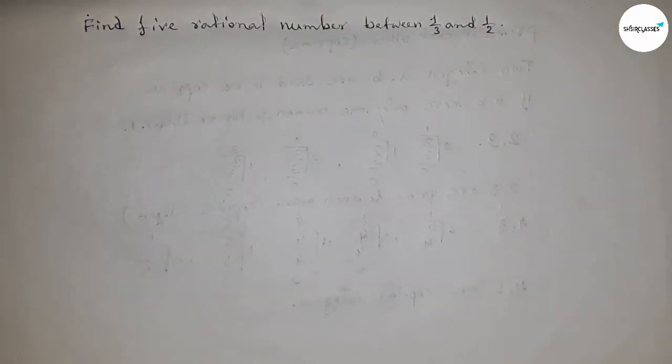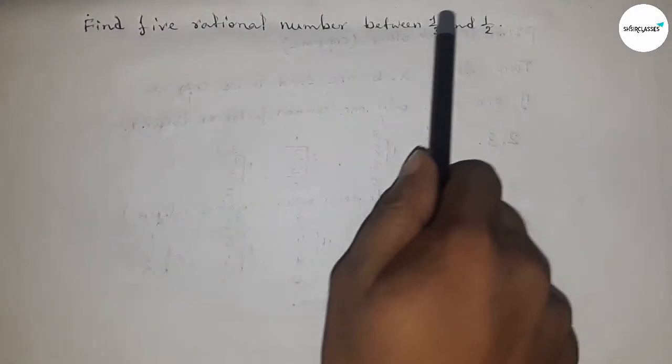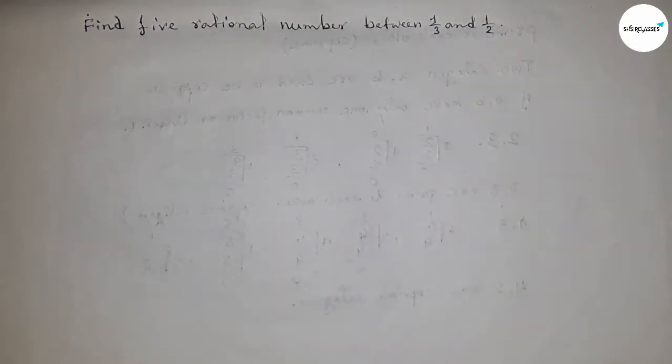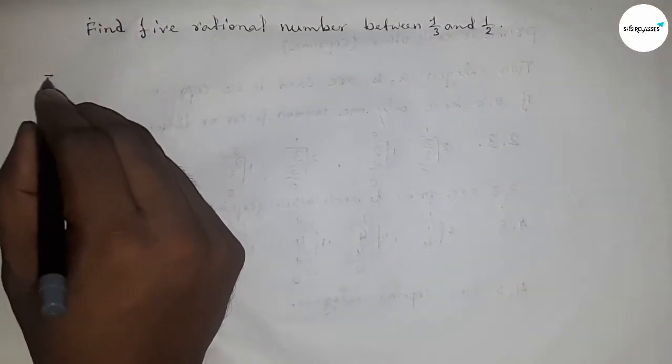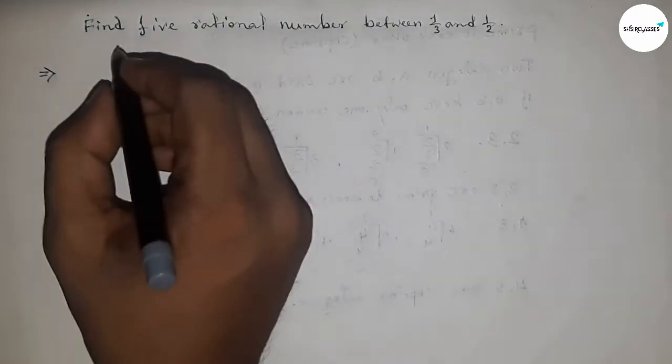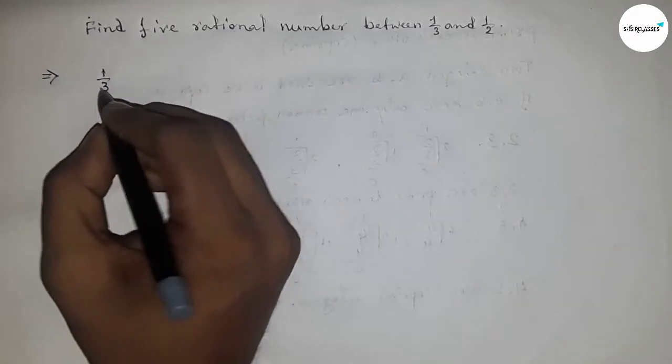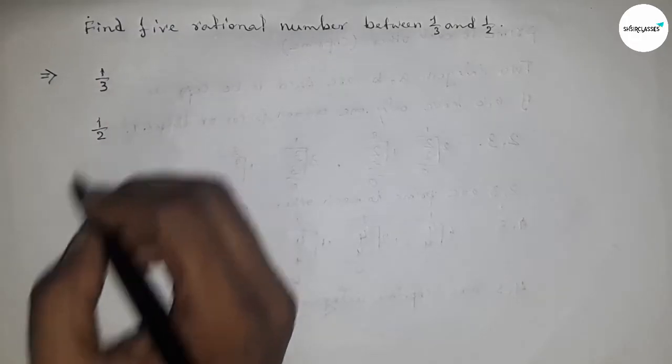Hi everyone, welcome to Assessor Classes. Today we have to find five rational numbers between one upon three and one upon two. So first of all, write down here the given rational numbers: one upon three and one upon two.